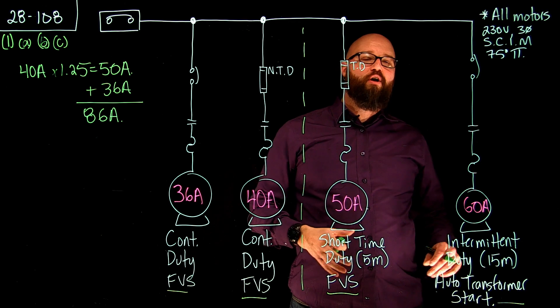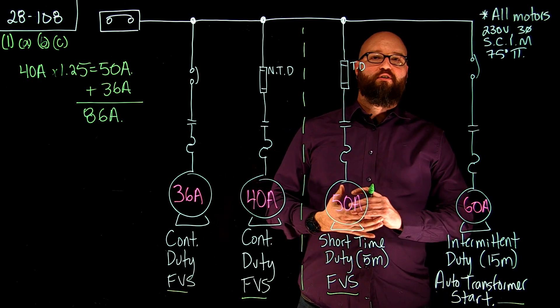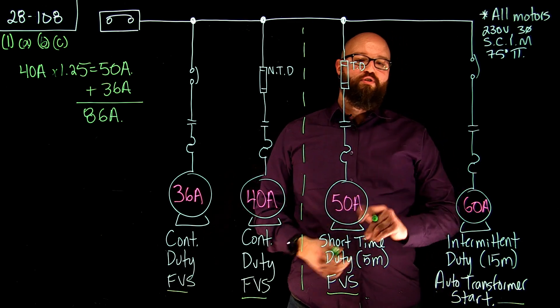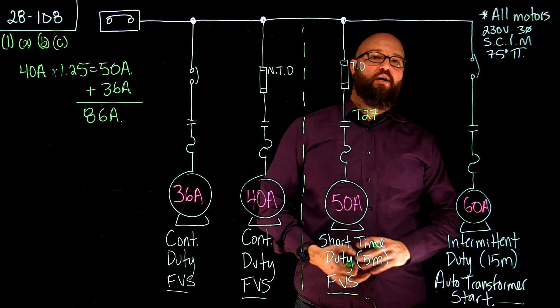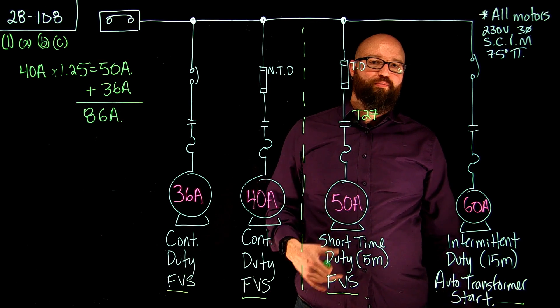We're kind of going to do the same thing. We're not going to take it all the way to the branch circuit conductor size, but we do need to go to Table 27 for each one of these motors or each one of these duty ratings and find out what the multiplier is.